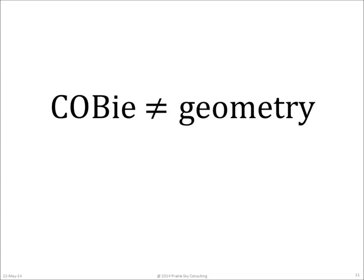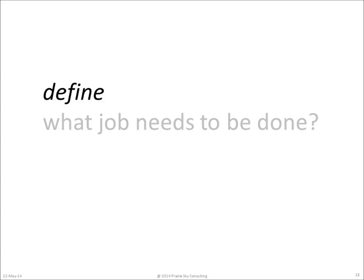COBE does not require that any information about the geometry of the building be provided — that information is provided elsewhere. So the most important thing an owner can do when thinking about COBE is to define what job needs to be done and what data is needed to help perform that job.